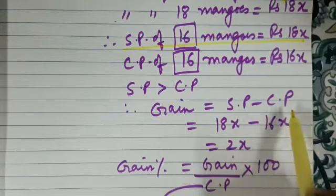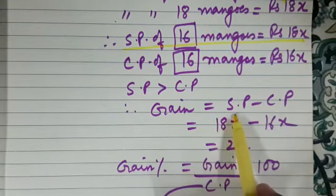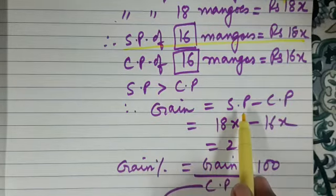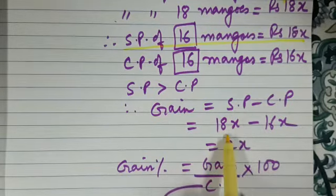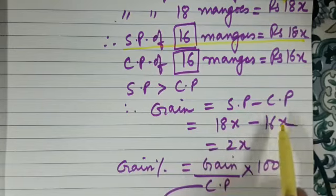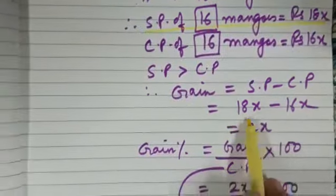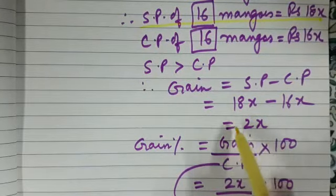We are comparing selling price and cost price of 16 mangoes, so we have to note. SP of 16 mangoes is 18x and CP of 16 mangoes is 16x. So when we subtract 16x from 18x, we get 2x.